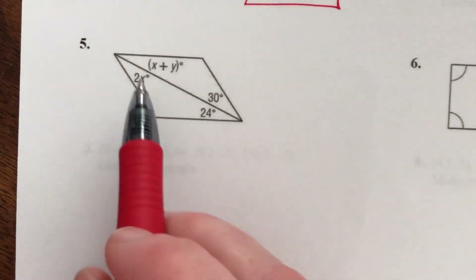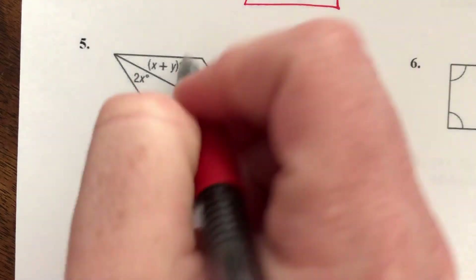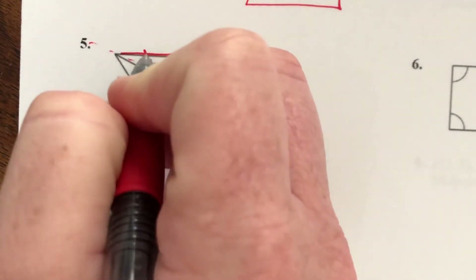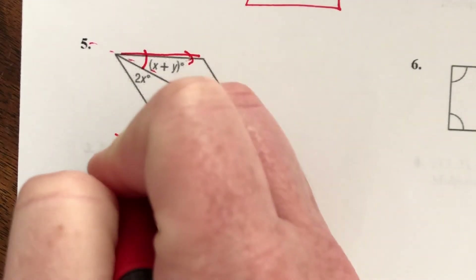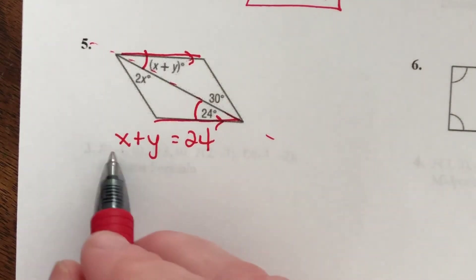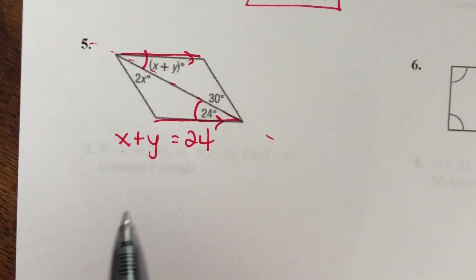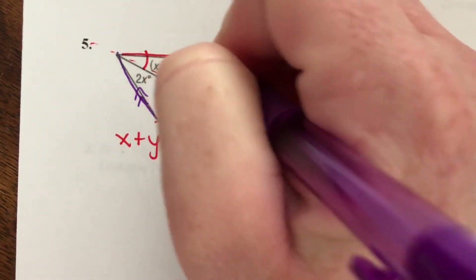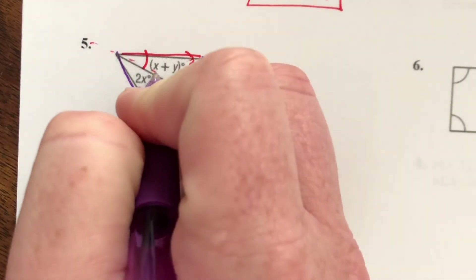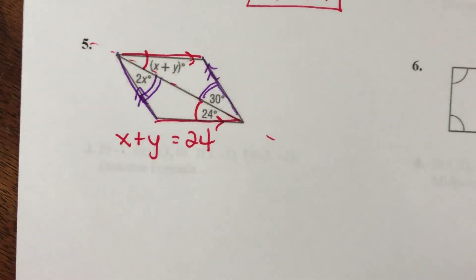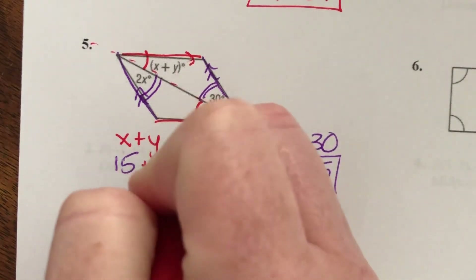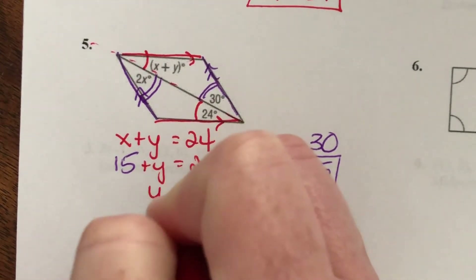Example 5: both pairs of opposite sides can be parallel. If the top is parallel to the bottom and cut by a transversal, alternate interior angles are congruent: x + y = 24. But I need to find one variable first. Looking at the other pair of sides — also parallel — gives alternate interior angles: 2x = 30, so x = 15. Plugging in: 15 + y = 24, subtract 15, so y = 9.